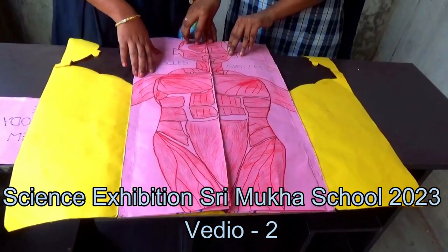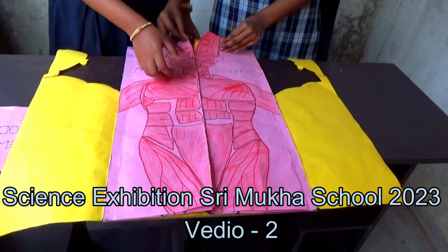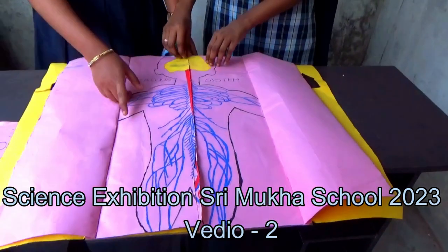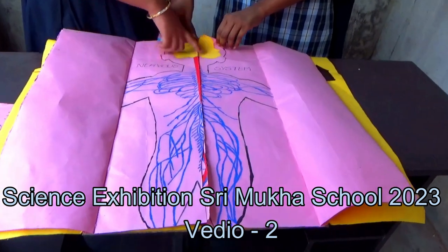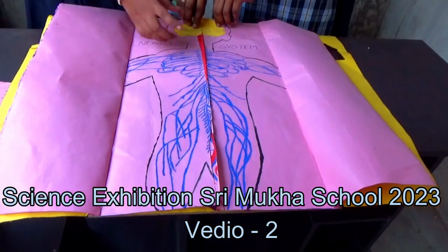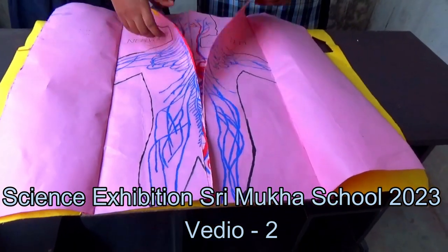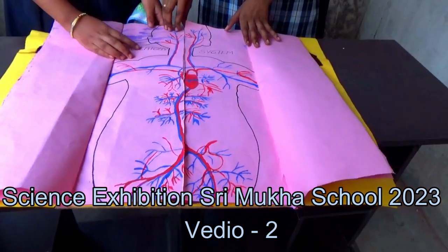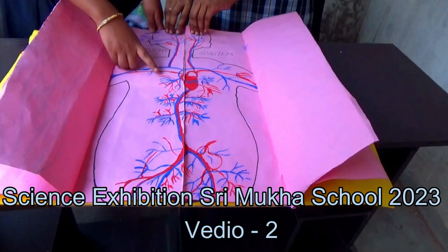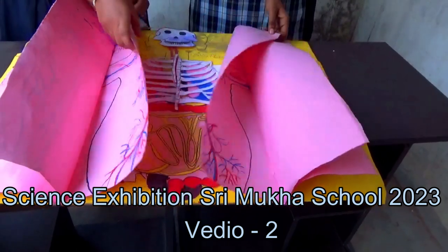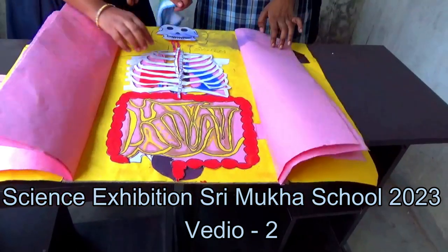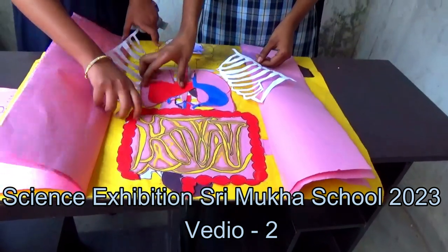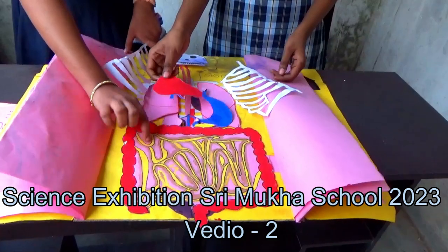This is the nerve system — all nerves are controlled by the brain. The brain controls the entire nerve system. This is the circulatory system — blood cells circulate through the heart. And these are the skeletal organs. This is the stomach and digestive system.